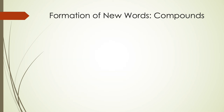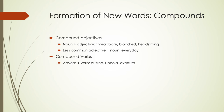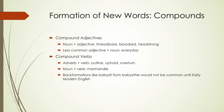Other compounds include compound adjectives — noun plus adjective giving us 'threadbare,' 'blood red,' 'headstrong,' and adjective plus noun giving us 'everyday.' Compound verbs include adverb plus verb giving us 'outline,' 'uphold,' 'overturn,' and noun plus verb giving us 'manhandle.' We also start seeing some back-formations, though they're not as common until Early Modern English — things like 'babysit' from 'babysitter' wouldn't really be common until Early Modern English, but we're starting to see examples during Middle English.